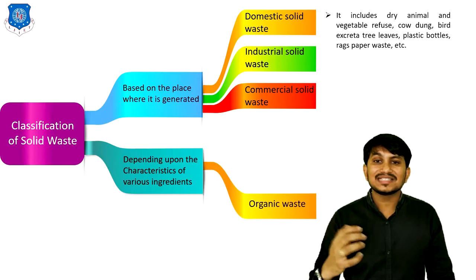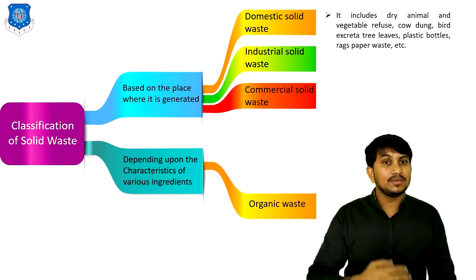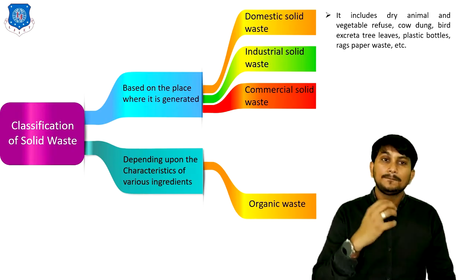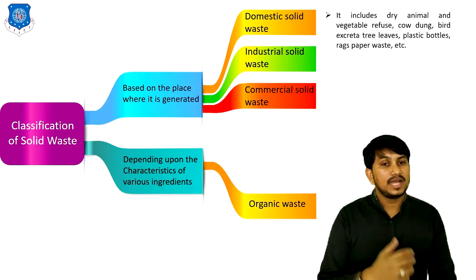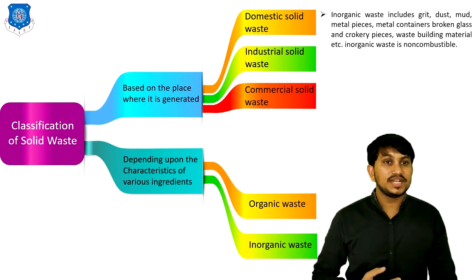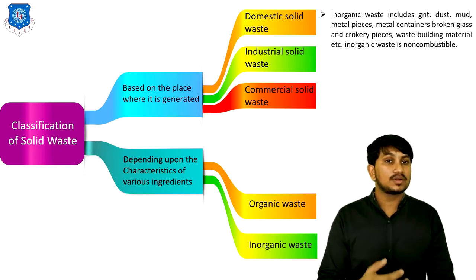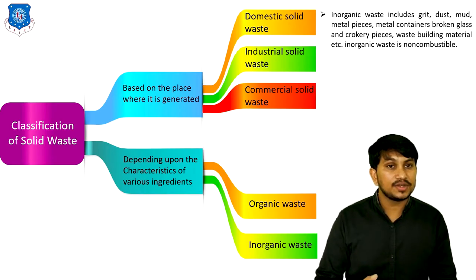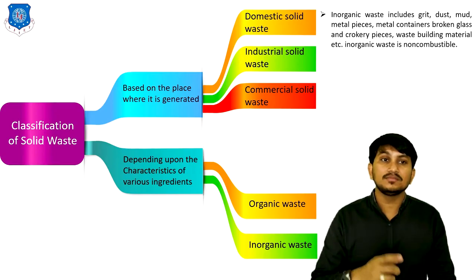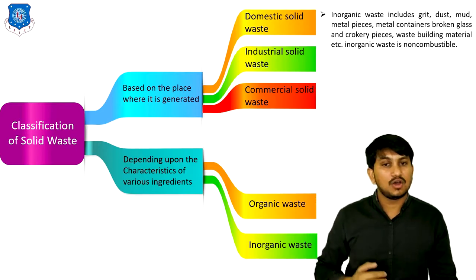Depending upon the characteristics of various ingredients: First is organic type of waste. It includes dry animal and vegetable matter, cow dung, bird excreta, leaves, plastic bottles, rags, paper waste, etc. — which are combustible in nature. Second is inorganic waste, which includes grit, dust, mud, metal pieces, metal containers, broken glass, anchoring pieces, waste building material, etc. These are non-combustible or non-biodegradable. This is all about the classification of solid waste.